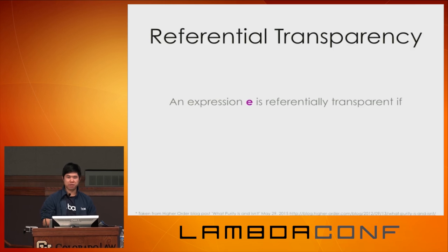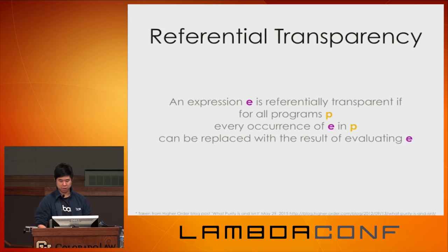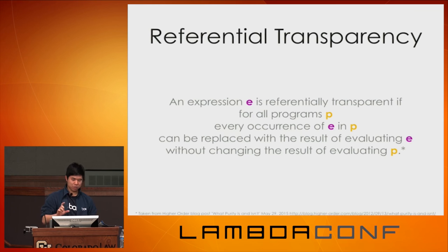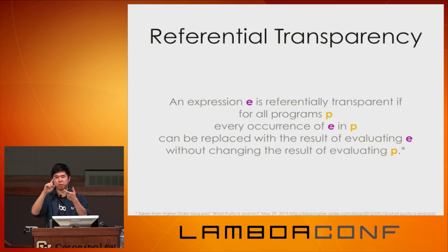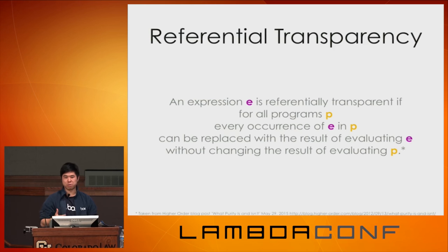Referential transparency is a property of expressions — an expression e is referentially transparent if, for every program p, every occurrence of that expression can be replaced with the result of evaluating it without changing the result of evaluating p. In the case of random number generation, if we replace random.nextInt with what it evaluated to and replace all occurrences, the behavior of our program changes. If you call a side-effecting method twice and the second call throws an exception because a global counter decremented, you've gotten different behavior from the same expression.